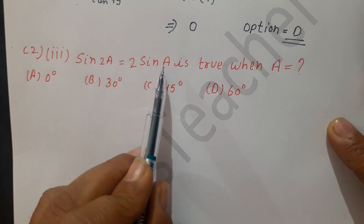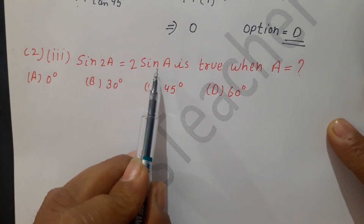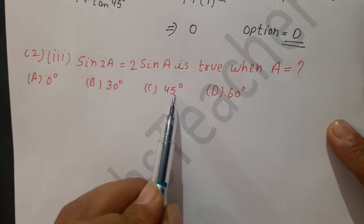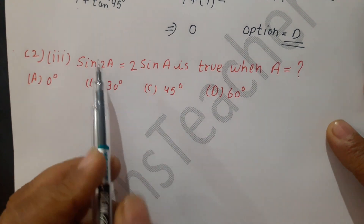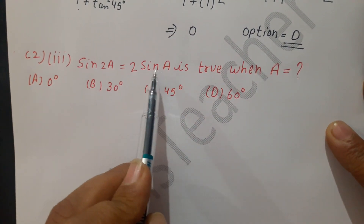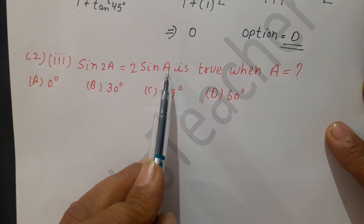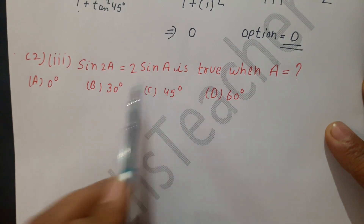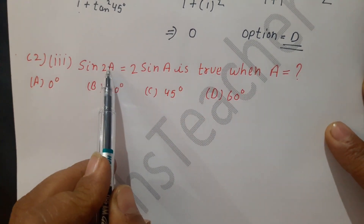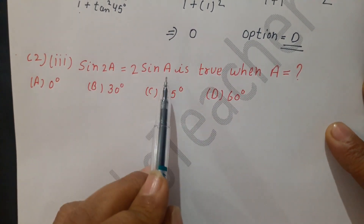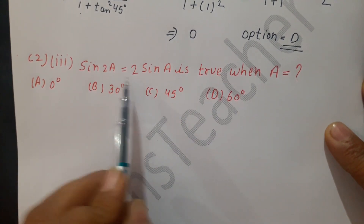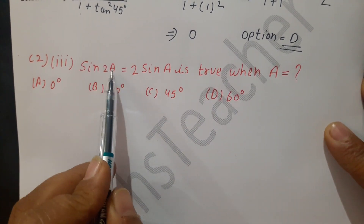If we put A = 45°, then the left side is sin90° and the right side is sin45°, so these are not the same. If we put A = 60°, the left side gives sin120° and the right side gives sin60°, so these 3 values — 30°, 45°, 60° — are not suitable for this equation.